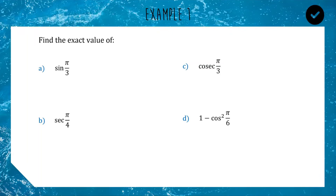We're going to find the exact value of expressions involving radians. The way I handle these is by thinking of radians as my second language and degrees as my first. So first I'll convert the angle into degrees, because I'm better at memorizing exact values in degrees. For question a, we've got sine of π/3.